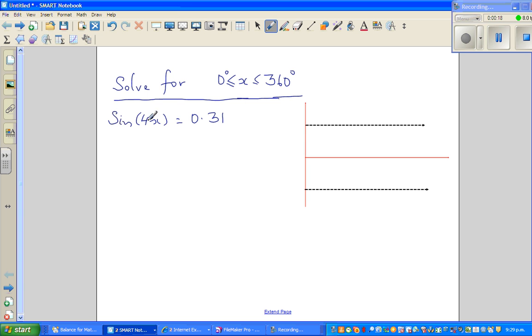So the question is solve for x between 0 to 360 degrees. The equation is sin(4x) = 0.31. So I want to graph sin(4x), and then I will explain how to solve it. If you have seen my previous videos, first decide the amplitude.